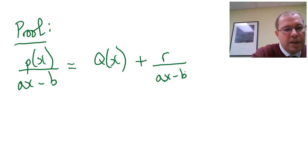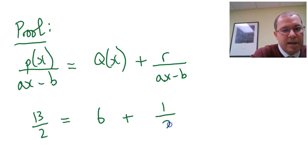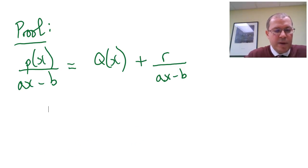A quick number example to show that working is, for example, imagine you've got 13/2. How many times does 2 go into 13? Well, 2 goes into 13 six times. That's my quotient. My remainder is 1, which still has to be divided by the divisor, 2. So that's how that formula is working. So we know that we can write any polynomial that's divided by ax-b in this form. It equals the quotient here plus the remainder divided by divisor, ax-b.